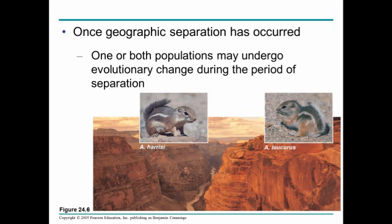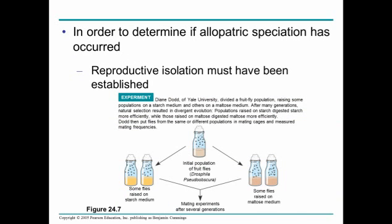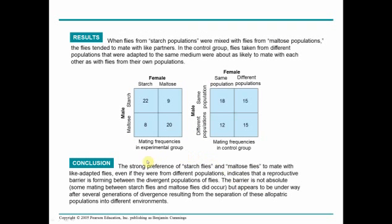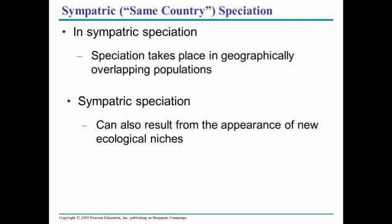Now if you try to get them to mate with one another, biologically they cannot. Here's an example of an experiment done by Dodd at Yale, where she took flies and reared some on starchy food and some on maltose food, then combined the two together. What she found was that the starch males and females preferred one another, and the maltose males and females preferred one another, but the maltose and starch flies did not mate frequently together. They didn't like one another, so to speak. So this would be an example of allopatric speciation, of course.